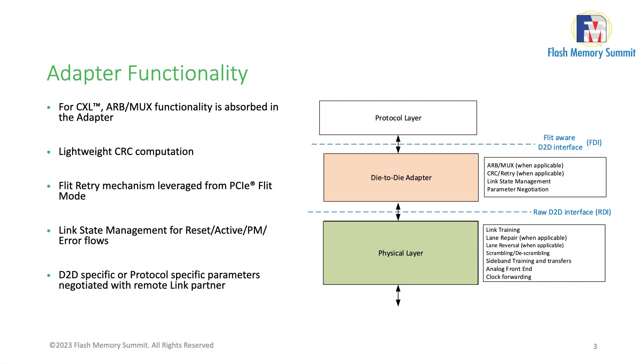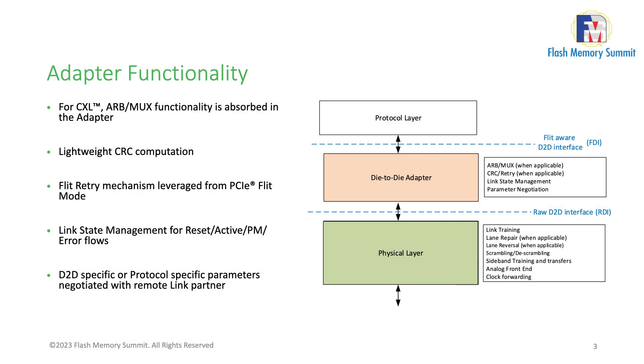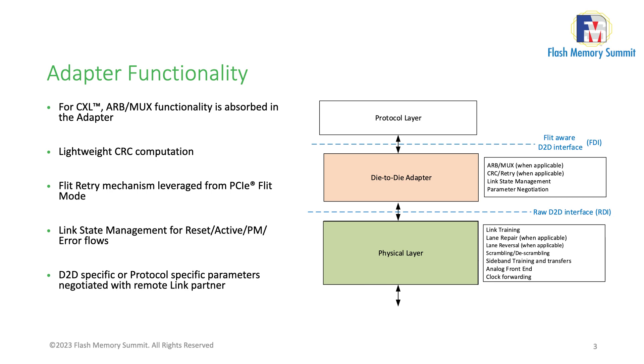Talking about adapter functionality and flit formats — one important thing is that in order to simplify transitions of existing IPs building PCIe and CXL transaction layers to a UCIE stack, we've absorbed the ArbMux functionality defined in the CXL specification within the die-to-die adapter. That takes care of all the ALMP handshakes defined in the CXL specification. What it exposes on FDI is effectively the virtual link state machines from a transaction layer perspective to the protocol layer. We have a very lightweight CRC — a 16-bit CRC over 128 bytes for the corresponding flit formats.